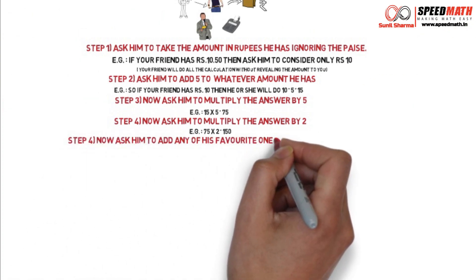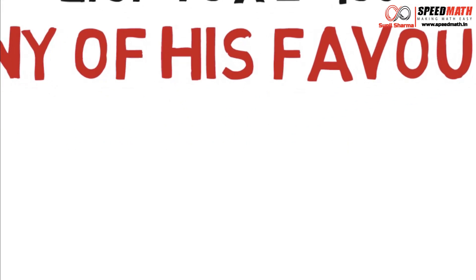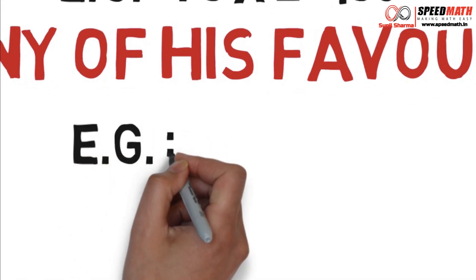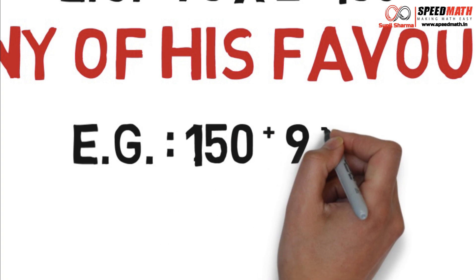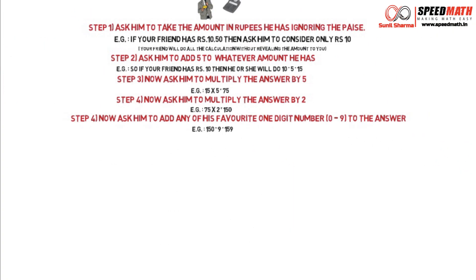Now ask him to add any favorite one-digit number between 0 and 9. We had 150 — let's say my favorite digit is 9, so we would get 159. After this step, ask your friend to tell you the total shown in the calculator. This is where the magic happens, because at this point you guess mentally how much money your friend has in his pocket.